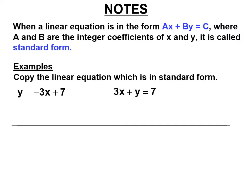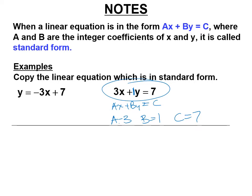When you see ax plus by equals c, that's called standard form. So looking at two equations, the one in standard form has a equal to 3, b equal to 1 — that's why we don't write it — and c equal to 7. Turns out those are the same line. So that one is standard form, and the old form is called slope-intercept. Slope-intercept is where you see the slope and part of the y-intercept.